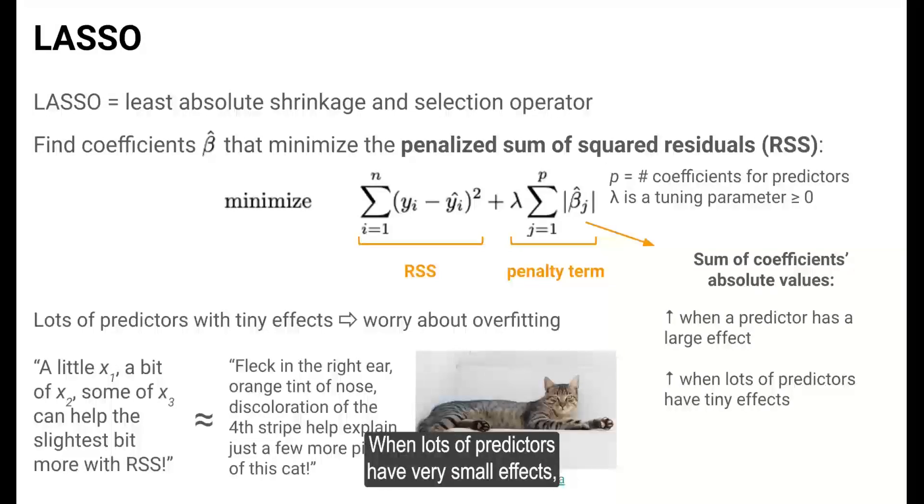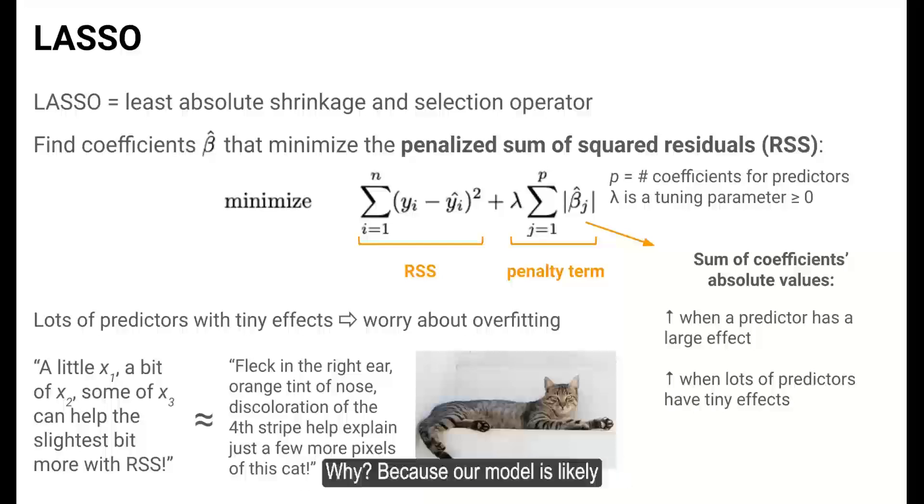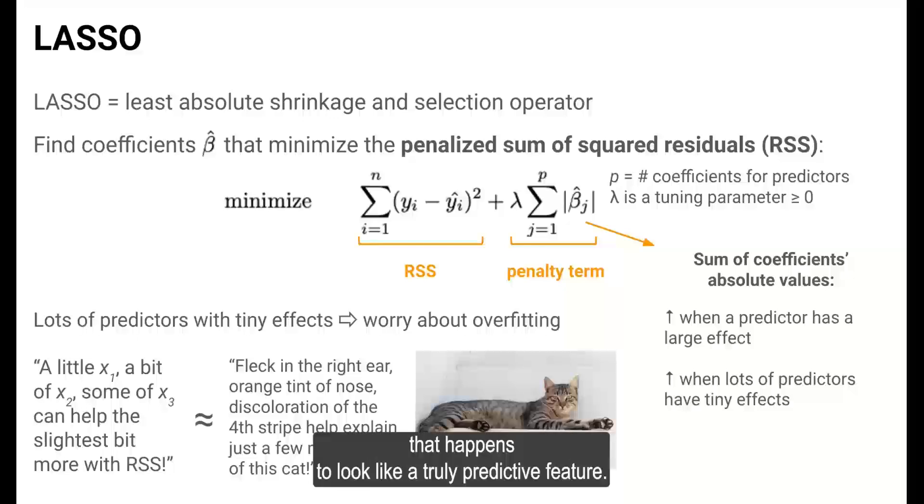When lots of predictors have very small effects, we should be worried about overfitting. Why? Because our model is likely picking up on noise—random idiosyncratic variation that happens to look like a truly predictive feature just by chance.